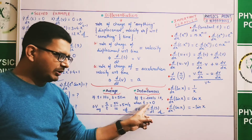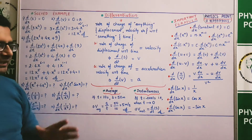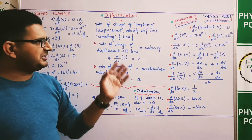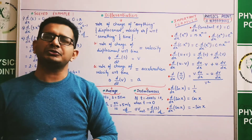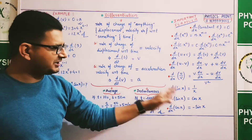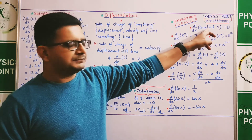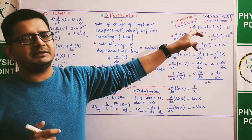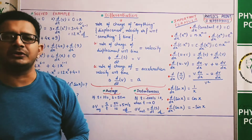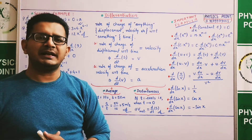Differentiation use कब करेंगे? जब time interval बहुत छोटा हो जाए, उस case में rate of change define करने के लिए differentiation की मदद लेते हैं। हर process को करने के लिए कुछ rules और formulas होते हैं। Similarly differentiation perform करने के लिए भी कुछ basic formulas हैं। अगर किसी constant का rate of change define करें — constant तो किसी भी quantity के respect में change होगा नहीं — तो differentiation of a constant is zero।